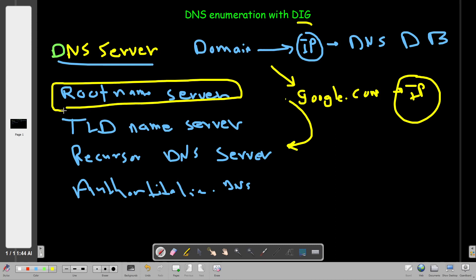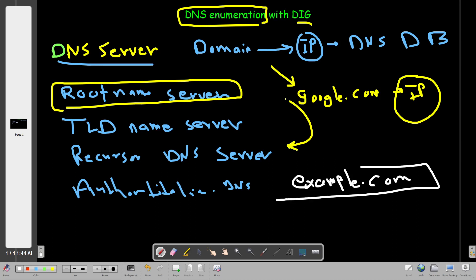When we say DNS enumeration, we aim to display all of the DNS records. So let's say we have a domain name like example.com. This domain has DNS records that state how the domain is accessed.